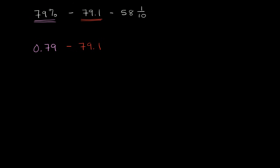And then 58 and 1 tenth. Well, 1 tenth is the same thing as 0.1. So you could view this as 58 and literally as 1 tenth. So it's minus 58 and 1 tenth, or you could view this as 58.1. So now they're all in the same format. Let's actually do the computation.